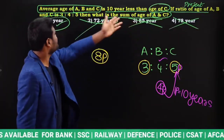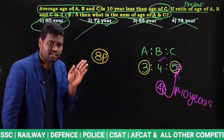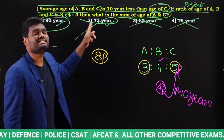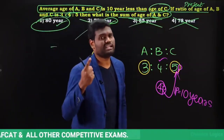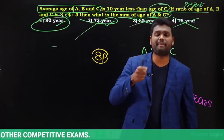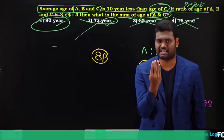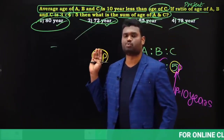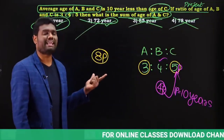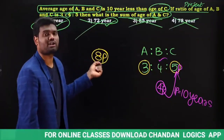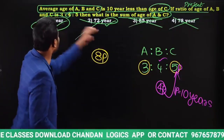Average of 3, 4, 5 is nothing but 4 — the middle term. C's age is 5 parts, average is 4 parts, difference is 1 part. The question clearly says the average of A, B, C is 10 years less than age of C. Difference in terms of years is 10 years, difference in parts is 1 part. So 1 part equals 10 years, and A and C together are 8 parts — giving 80 years, solved in a fraction of seconds.